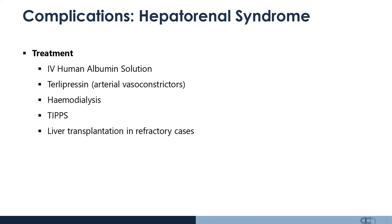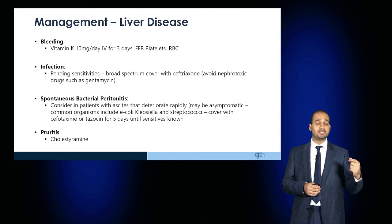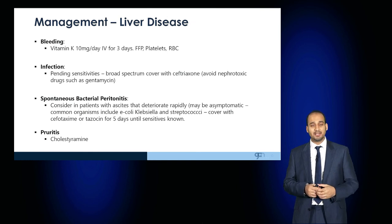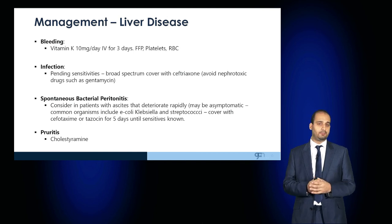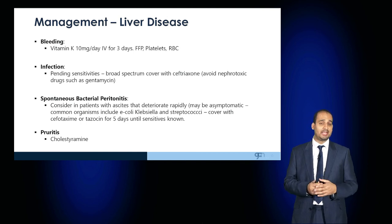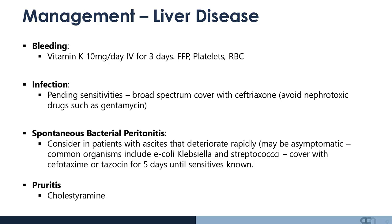Liver disease can intrinsically give rise to bleeding. If the patient becomes coagulopathic due to reduced production of clotting factors 2, 7, 9, and 10, vitamin K may be required along with other blood products such as FFP, platelets, and blood transfusion.